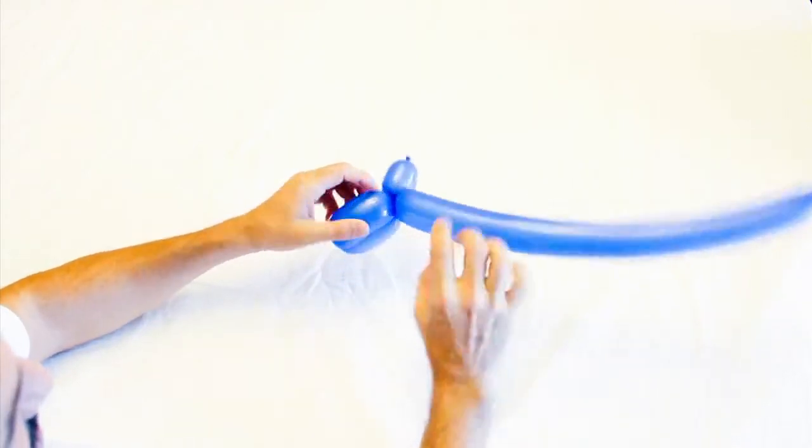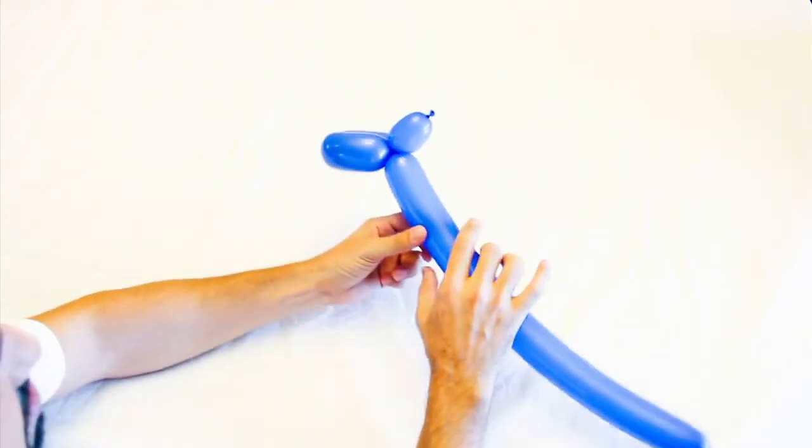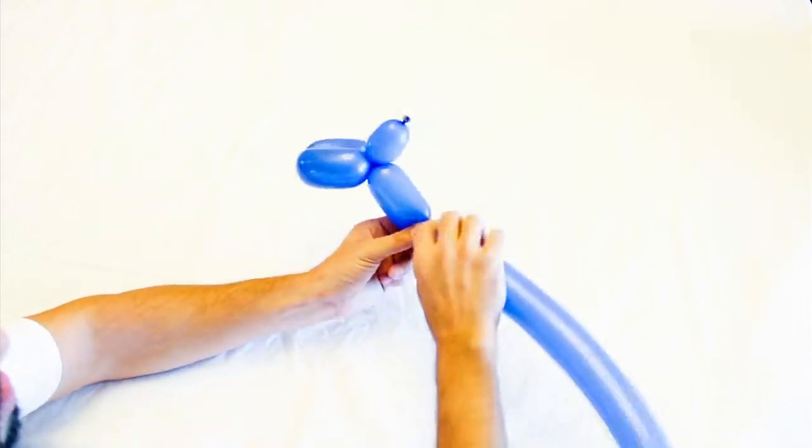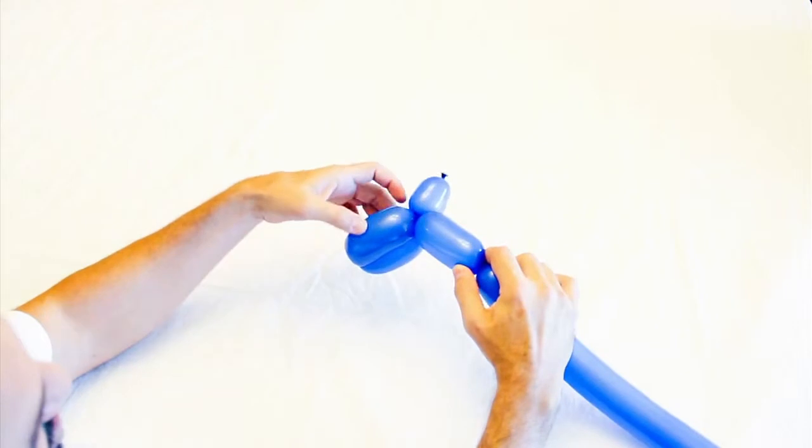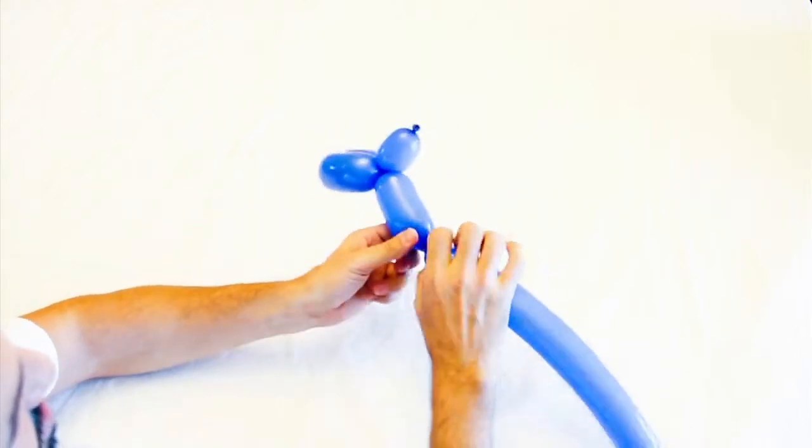You can also use a lock twist to form what's called a three-bubble roll, or a bird body, and that's taking two bubbles that are the same size, locked, twisted together, a third bubble the same size.